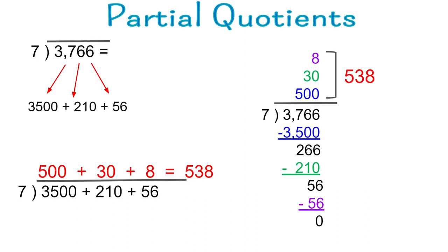Partial quotients — this problem is a little more complex. If you're dividing 3,766 by 7, you can break it into numbers that you know are evenly divisible by 7. So you might start with 3,500; pull that from 3,766, then pull 210, and you're left with 56. You can look at how many sevens are in each part. On the right-hand side is a more traditional approach combined with partial quotients: instead of writing a 5 above the 7, you write the number 500, using place value to accurately show the value. Standard algorithm absolutely works, but these are different ways to play with numbers and develop number sense.